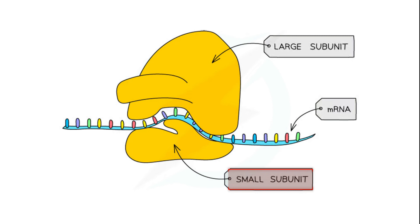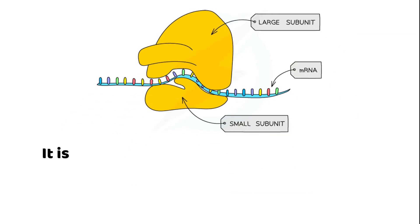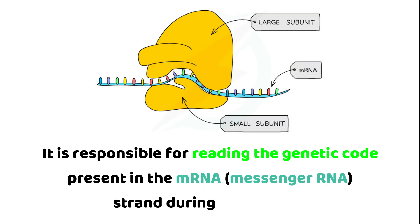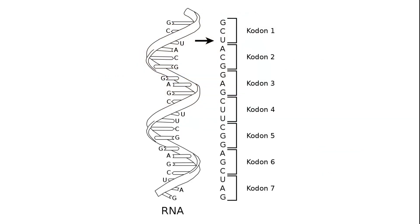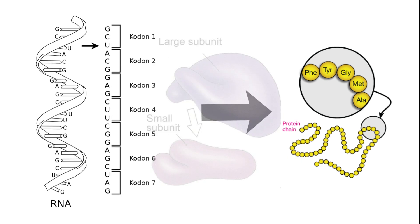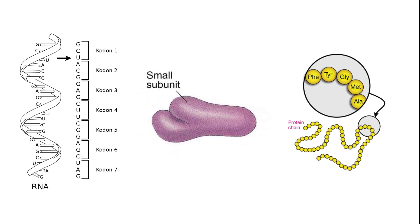The smaller subunit of the ribosome acts as a decoding unit. It is responsible for reading the genetic code present in the mRNA strand during translation. This genetic code is composed of nucleotide triplets called codons, each coding for a specific amino acid. The small subunit ensures the correct sequence of amino acids is brought together to form a functional protein.